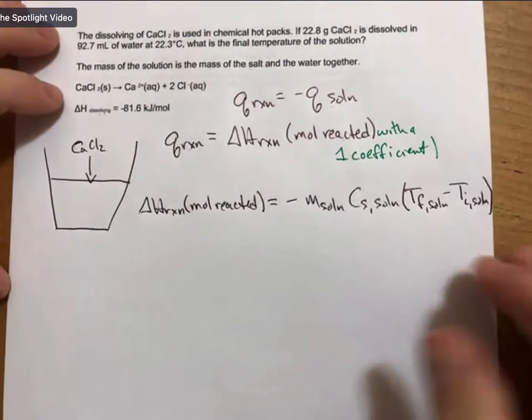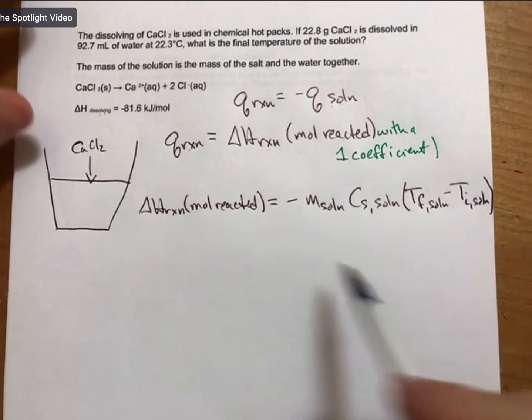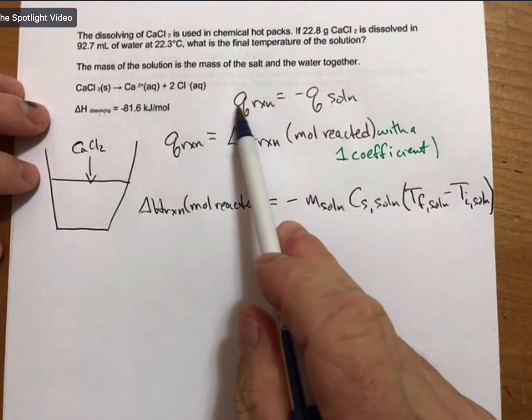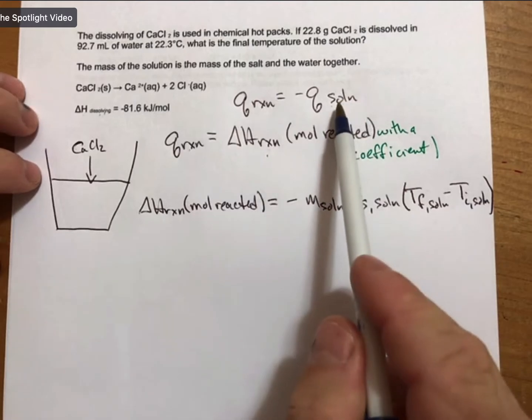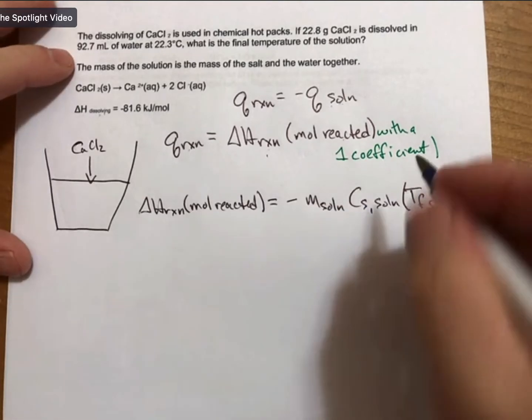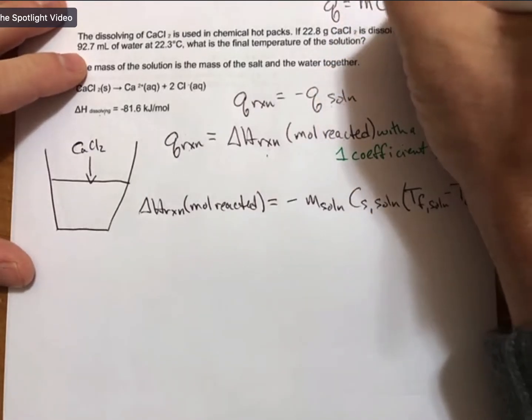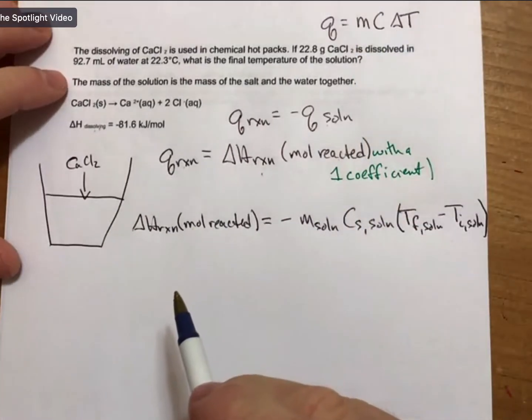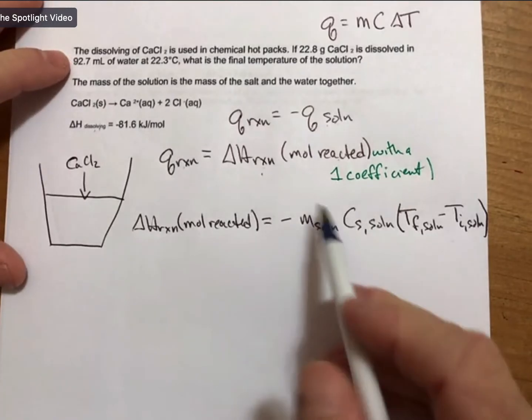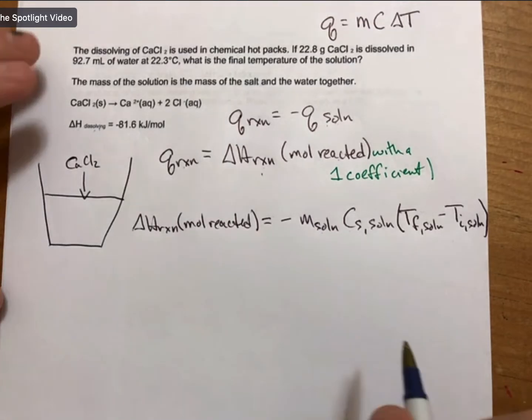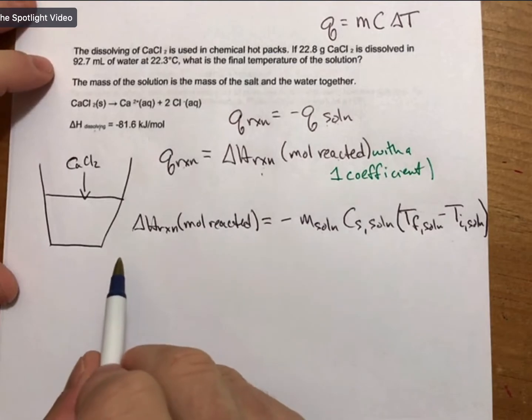So the only thing that's ever different as far as coffee cup calorimetry equations is the term for the reaction. So far we've seen Q solution equals this, sometimes called MCAT, because if you write it as Q equals MCAT, it sort of looks like Q equals MCAT with the delta symbol being an A. Q equals MCAT for the solution, it equals the same term for the water, and it equals the same term for the material gold that we've worked with in a previous problem.